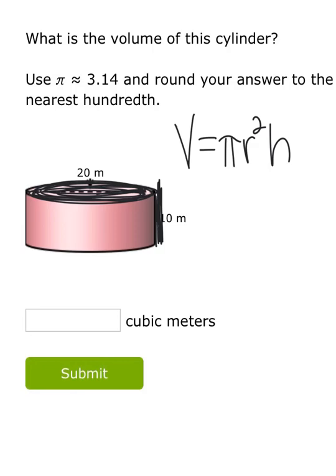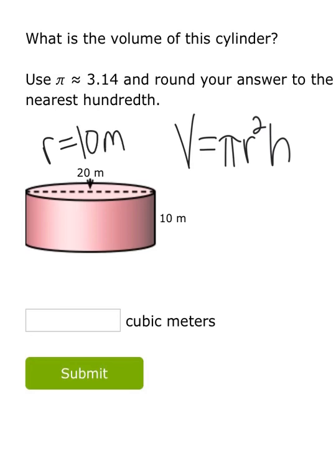For this example, we know the diameter is 20, but I don't need the diameter, I need the radius. Make sure you cut that in half. If they give you the diameter, the radius would be 10 meters since the diameter was 20. And we know that the height equals 10 meters. So we're going to plug in 10 for the radius and 10 for the height.